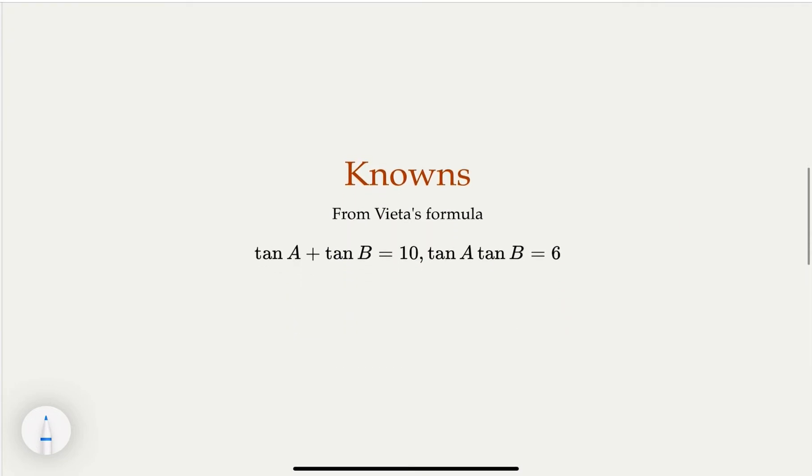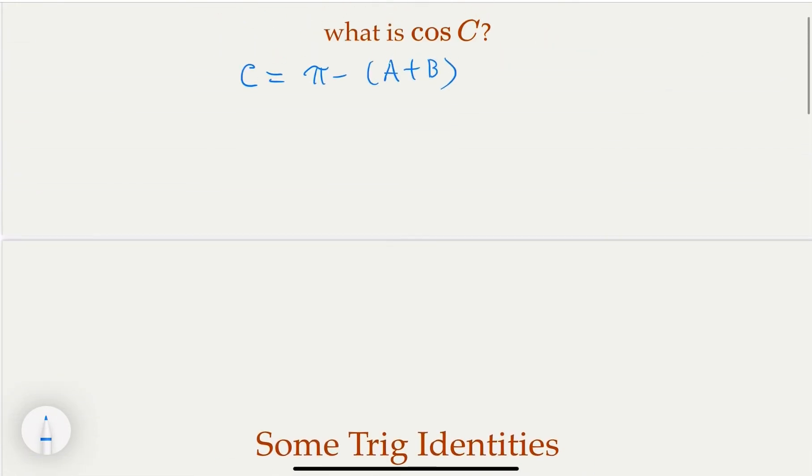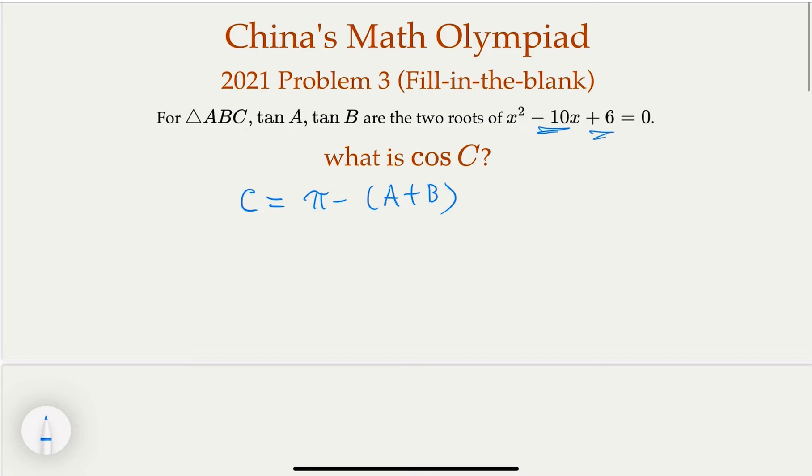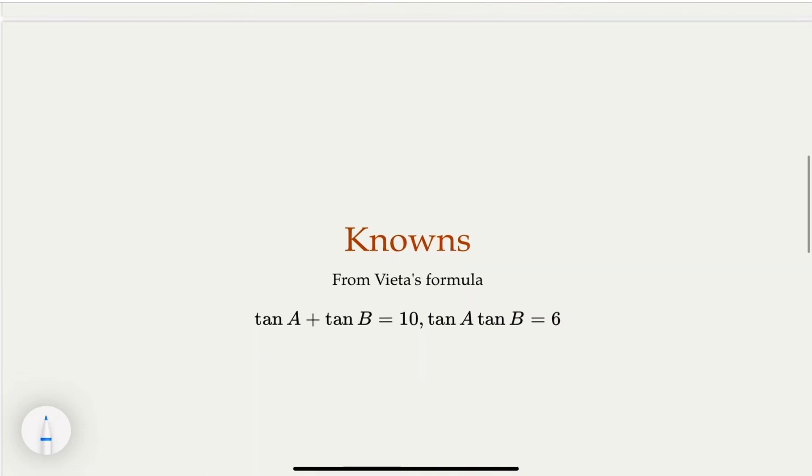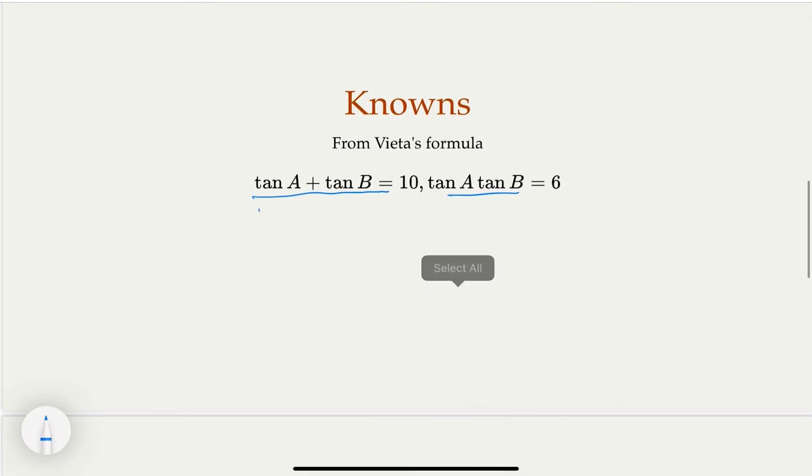And of course, since they are the two roots of the equation, like here is negative 10 and 6, so we know that the sum and the product. And then we use the trig identity for tangent (A + B). That would equal to (tan A + tan B) which is 10, divided by 1 minus tan A tan B, the product, which is 6. So that would give us negative 2.